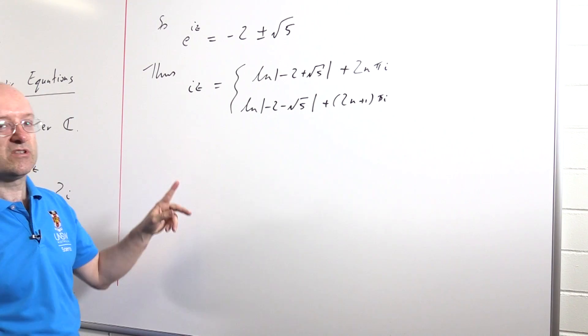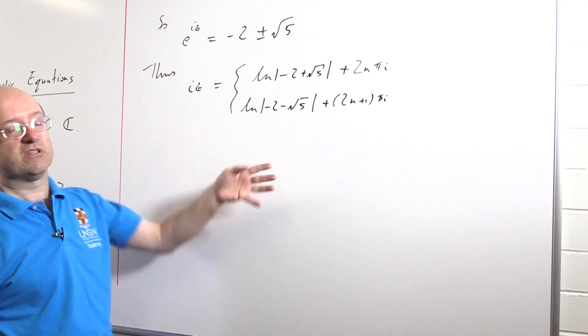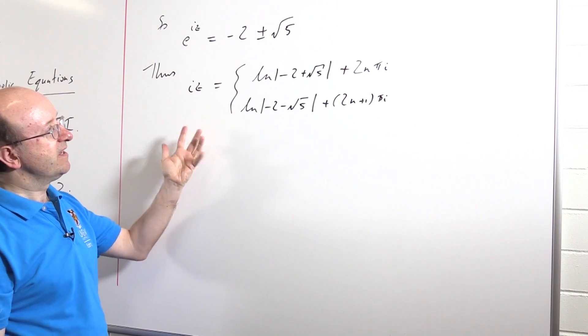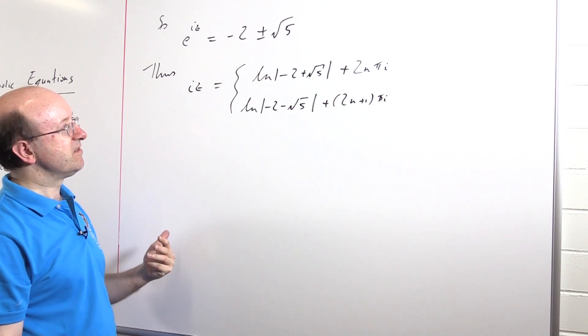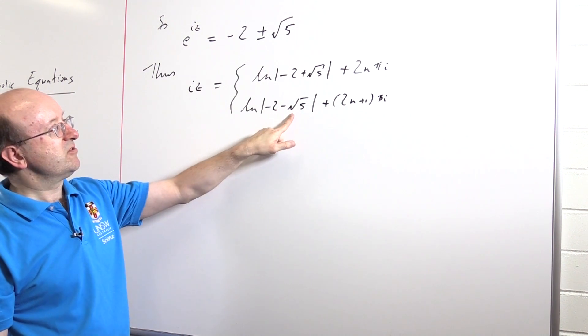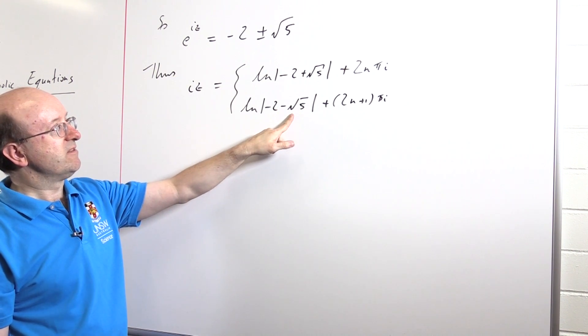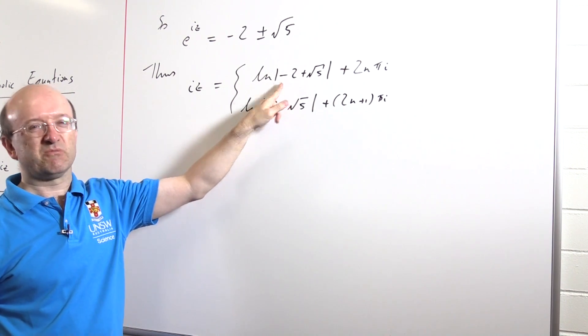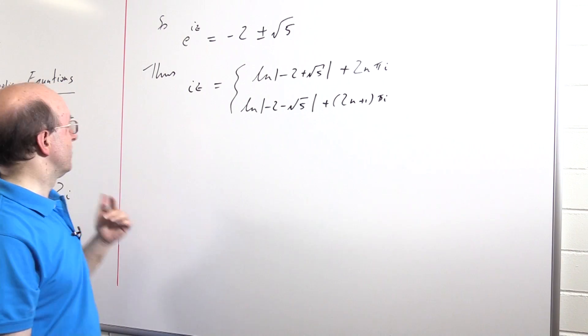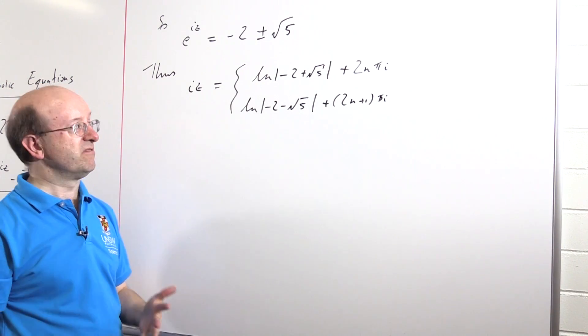Now, we can actually simplify this a little bit. I mean, you could just divide through by z and state the answer, that would be perfectly okay. But we can in fact get something a little neater out of this. Because minus 2 minus root 5 is 1 over minus 2 plus root 5.